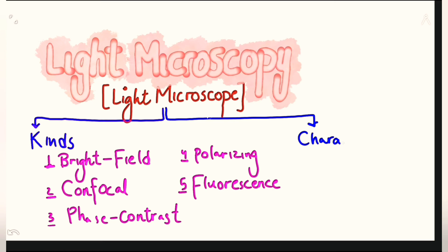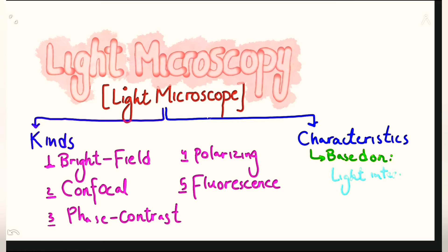Though these five types of microscopes differ from one another in many aspects, they share some basic and principal characteristics. They are all based on the interaction of light with the components of the tissue under study, and all five types are used to study the tissue, study the cells, and reveal the structures and features of the tissue and/or the cells under study.